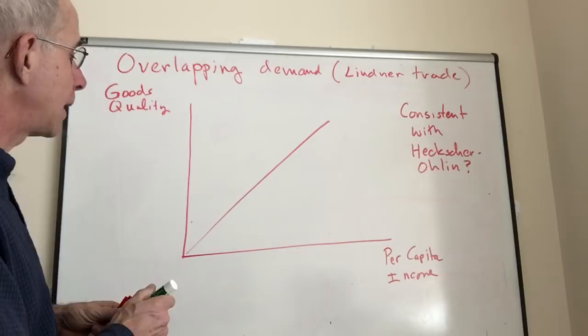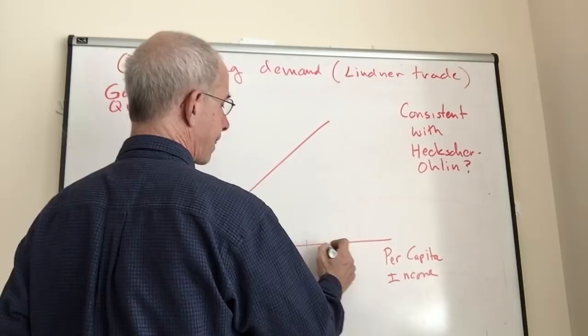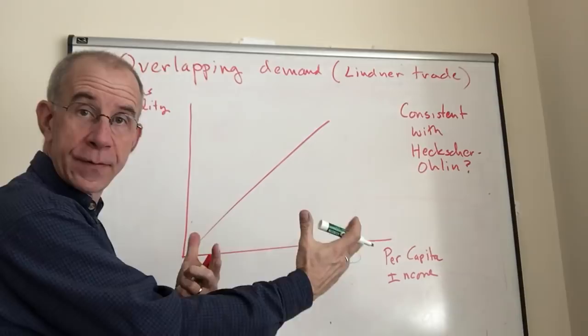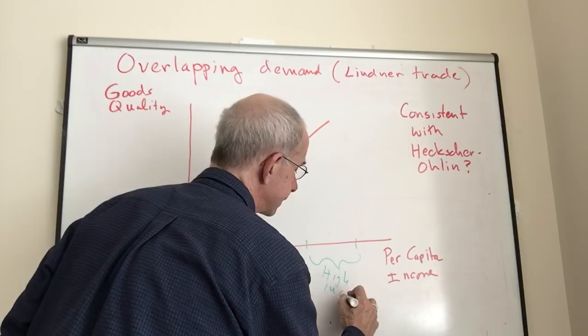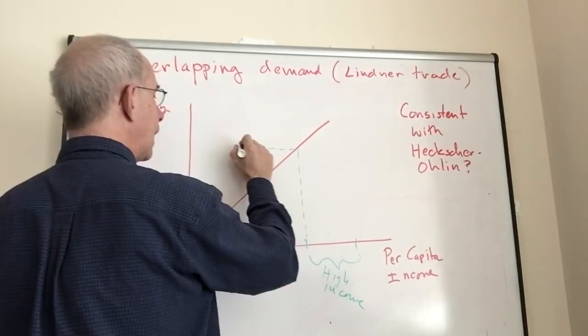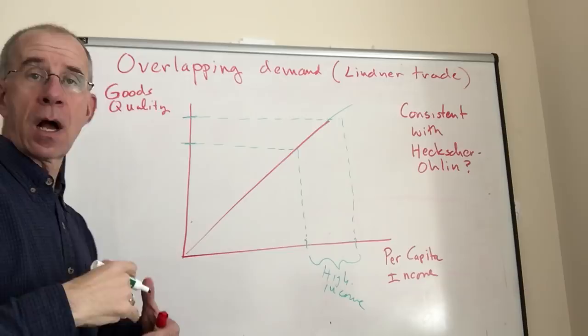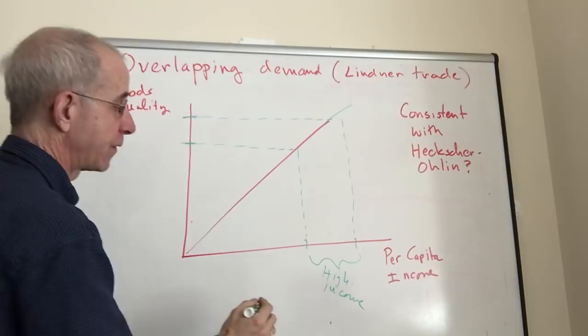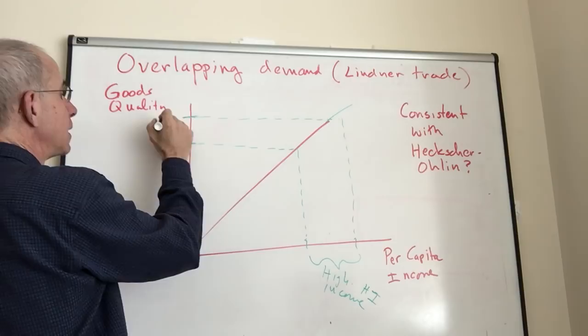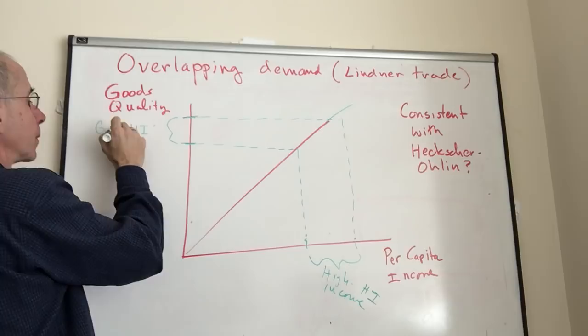Let's focus on three countries. Here is the range of income for the high income country, and associated with that to satisfy domestic demand is a range of quality products that's depicted here. This is the high income country, call it H.I. So this is the goods quality for a high income country.